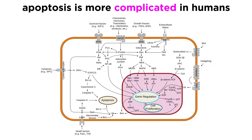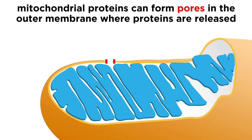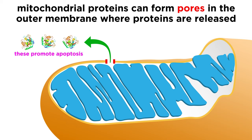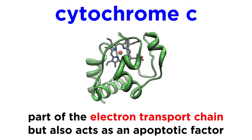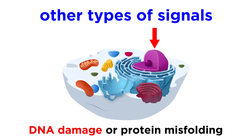In humans, things are a bit more complicated, with many more different caspases involved, utilizing different pathways depending on the cell type and the signal received. Oftentimes, an external signal results in mitochondrial proteins forming small pores in the outer membrane, such that other proteins within the mitochondrion are released, which in turn promote apoptosis. Some of these components have totally different functions within the cell, such as cytochrome C, which is part of the electron transport chain, but outside of the mitochondrial matrix it acts as an apoptotic factor. Other times, an internal signal from the nucleus is received if DNA damage is considerable, or from the endoplasmic reticulum if protein misfolding occurs.